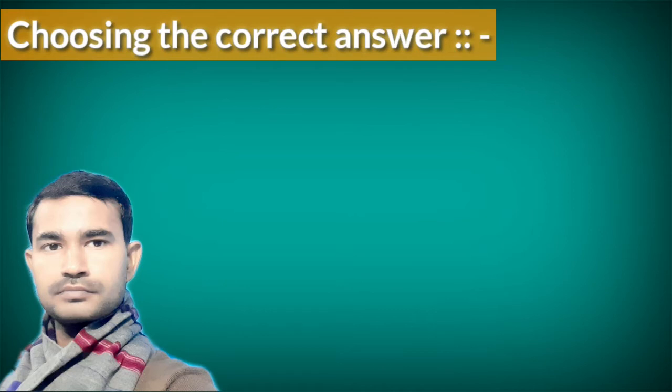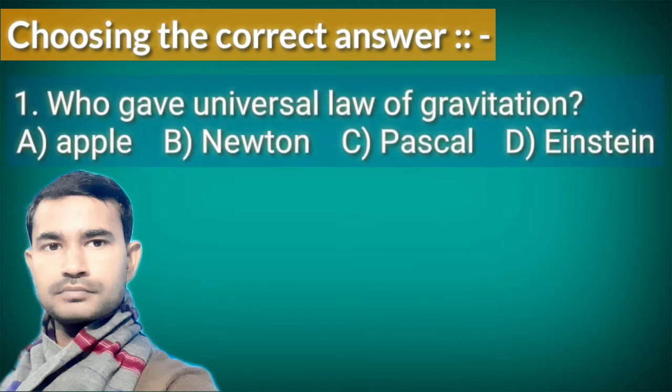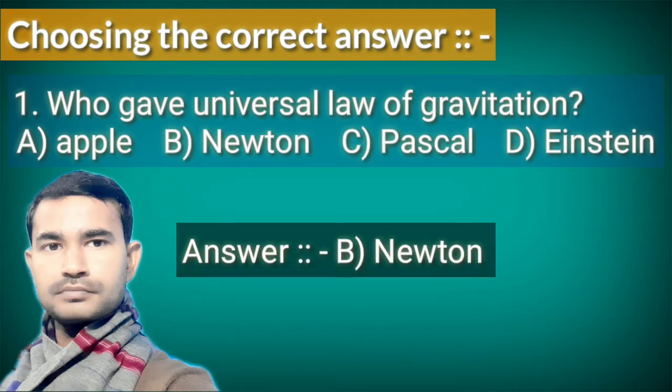Choosing the correct answer for the following questions. First question: who gave the universal law of gravitation? A. Apple, B. Newton, C. Pascal, D. Einstein. The correct answer is Newton.